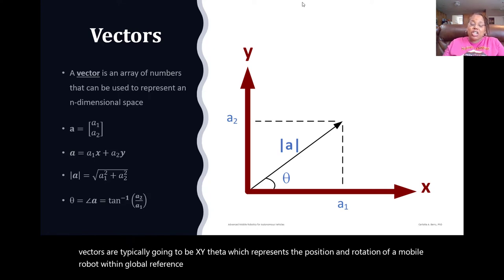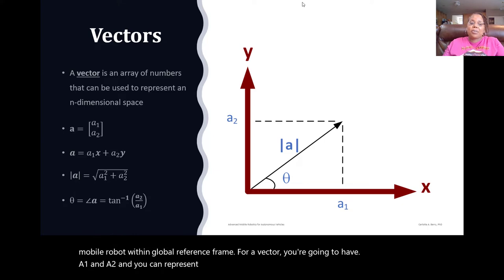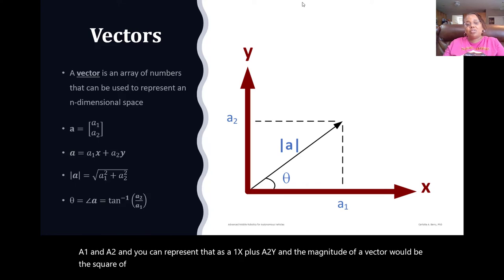For a vector, you're going to have a1 and a2, and you can represent that as a1x plus a2y, and the magnitude of a vector would be the square root of a1 squared plus a2 squared, and the angle theta would be the arctangent of a2 over a1.